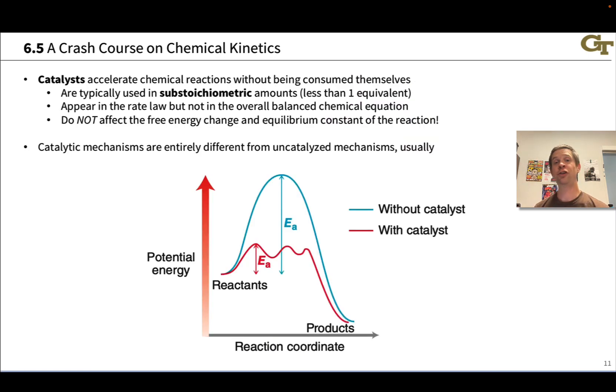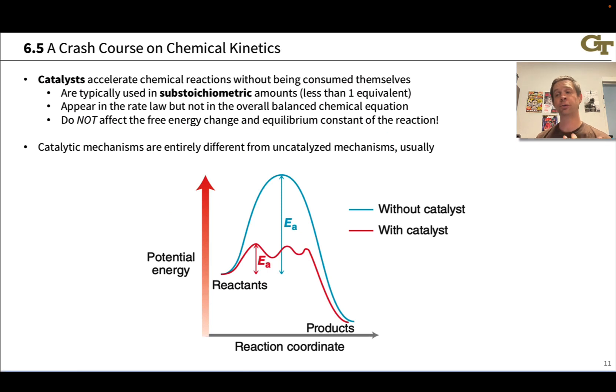One way we can think about changing the activation energy of the reaction is to introduce a compound that actually changes the mechanism such that the elementary steps involved in the new mechanism are lower in energy than the elementary steps of the mechanism without that substance. And catalysts are used to do this. A catalyst is defined as a species that accelerates a chemical reaction without being consumed itself. So it's not quite the same as a reactant. It can be used in less than one equivalent, in what's called a substoichiometric amount. And because it's continuously regenerated, I think about it like a molecular conveyor belt on some level, we don't need a full equivalent.